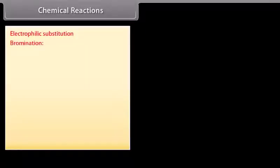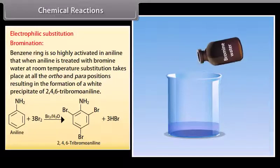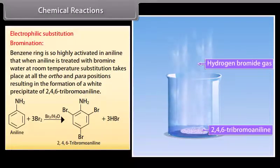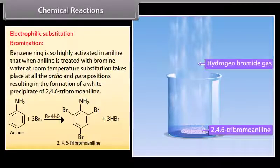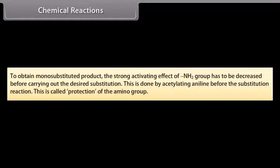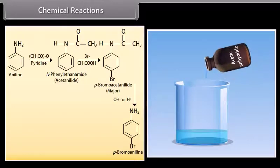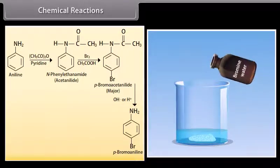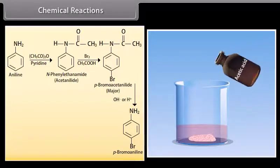Electrophilic substitution — Bromination: The benzene ring is so highly activated in aniline that when aniline is treated with bromine water at room temperature, substitution takes place at all ortho and para positions, resulting in a white precipitate of 2,4,6-tribromoaniline. To obtain a mono-substituted product, the strong activating effect of the NH2 group must be decreased by acetylation before carrying out the substitution. Aniline reacts with acetic anhydride and pyridine to form acetanilide, then bromine water and acetic acid are added to produce para-bromoacetanilide, which on hydrolysis yields para-bromoaniline.